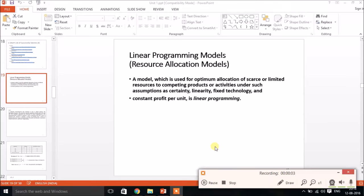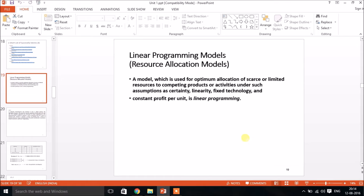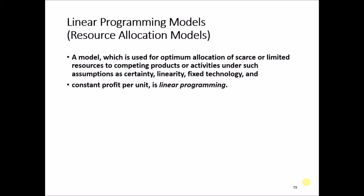Welcome to the tutorial on linear programming models for resource allocation. A model used to calculate the optimal allocation of limited resources to competing products or activities, under assumptions such as certainty, linearity, fixed technology, and constant profits, is called a linear programming problem. We will discuss some problems used for resource allocation models.